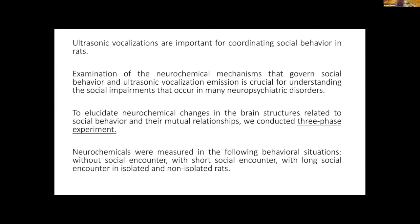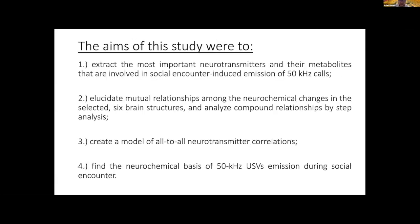Neurochemicals were measured in the following behavioral situations: without social encounter, with short social encounter (50 minutes), and with long social encounter, in both isolated and non-isolated animals. The aims of the study were to extract the most important neurotransmitters and their metabolites involved in social encounter and USV emission, elucidate mutual relationships among neurochemical changes in selective brain structures, analyze compound relationships by step-by-step analysis, and find the neurochemical basis of 50 kHz USV emission during social encounter.